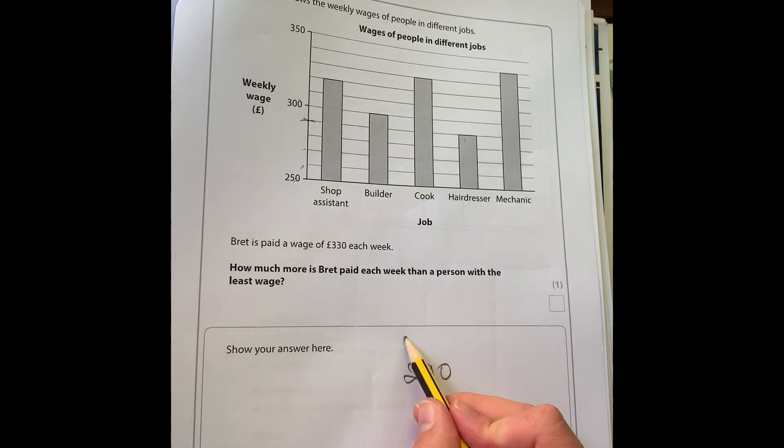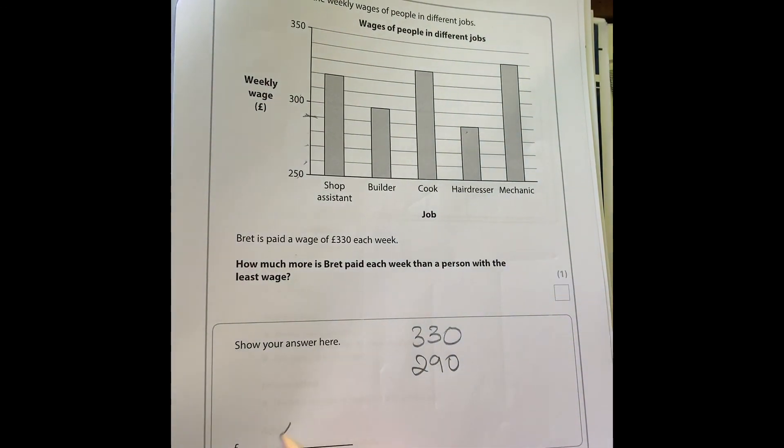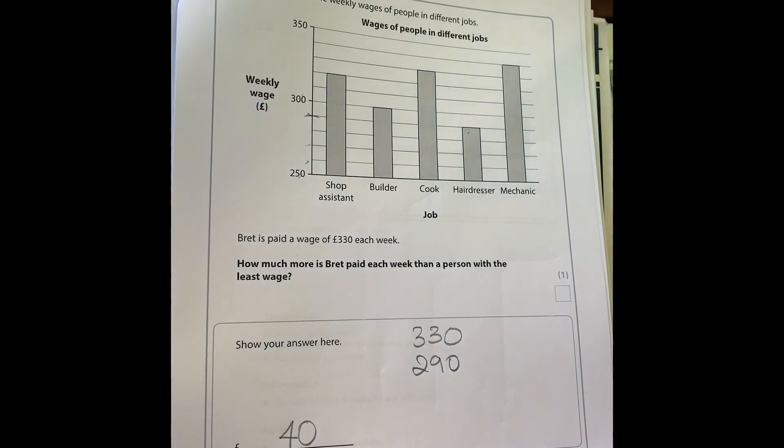Brett earns 330 pounds a week. So how much more is Brett paid than the hairdresser? We can see that the difference between those two is 40 pounds.